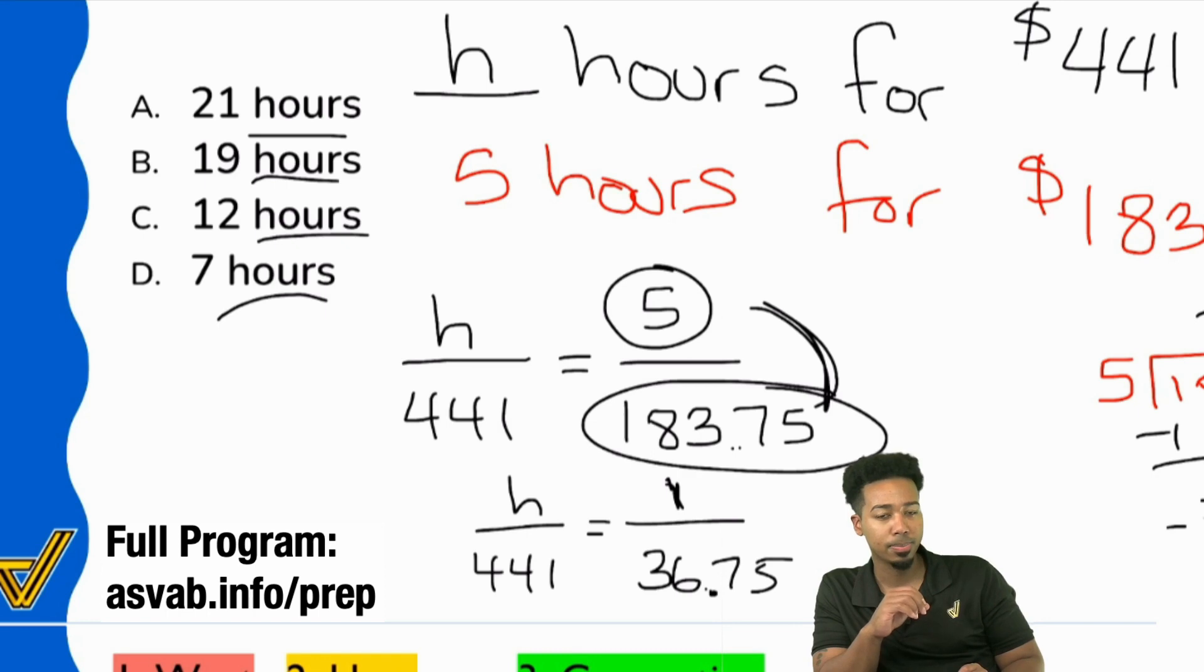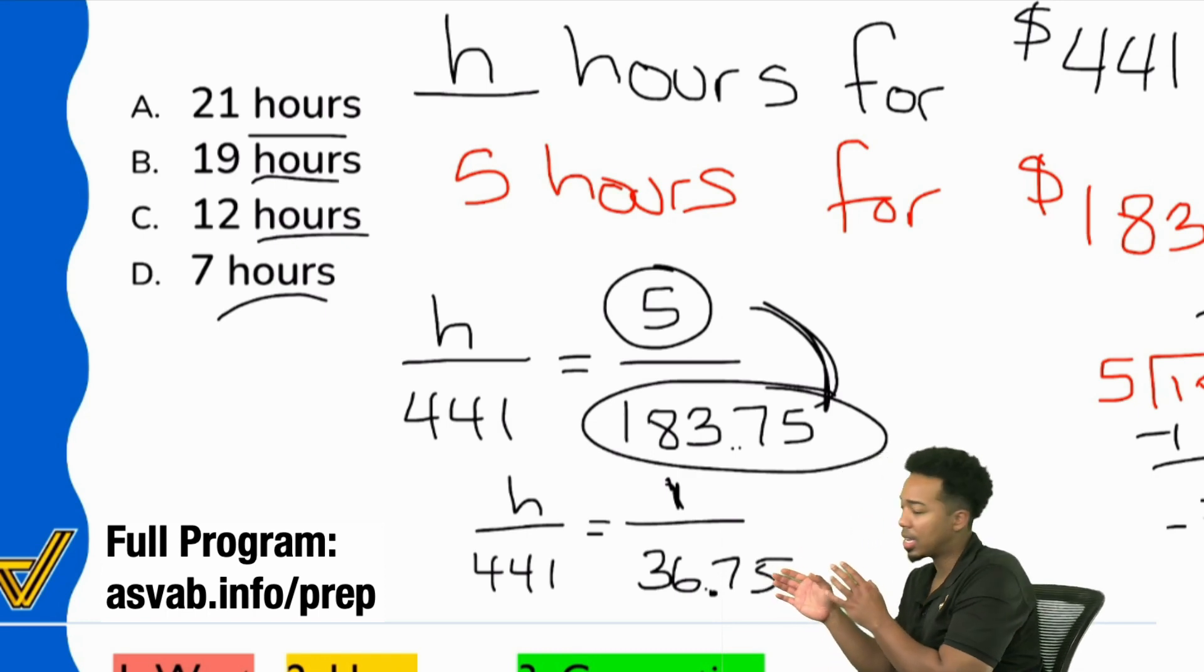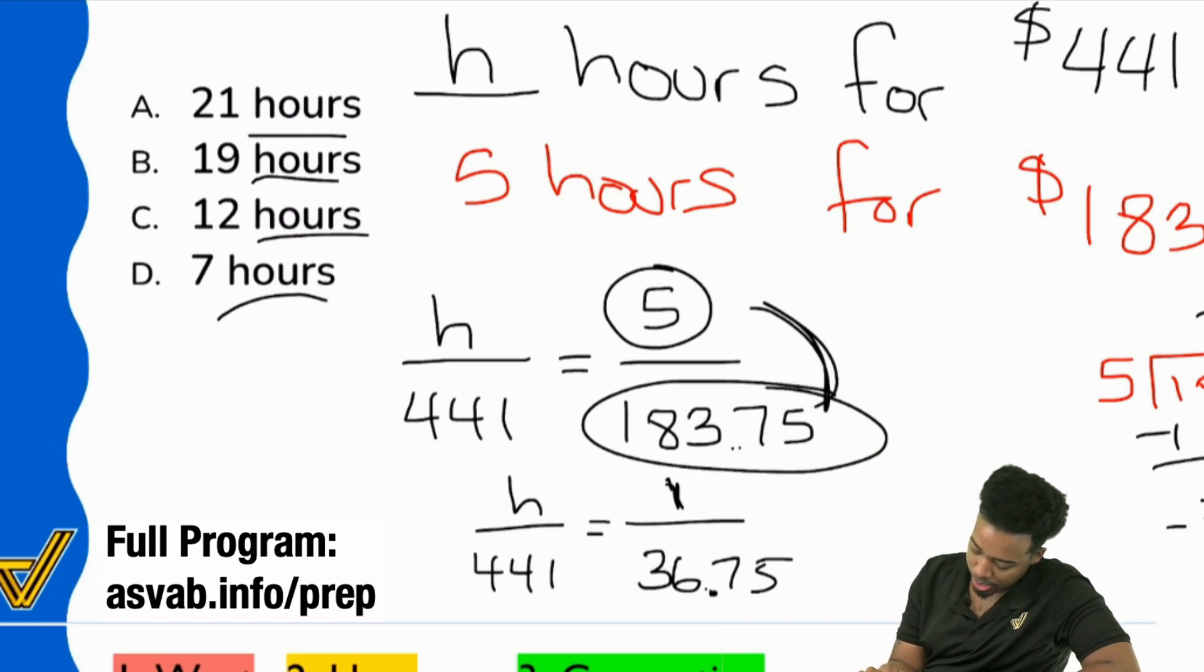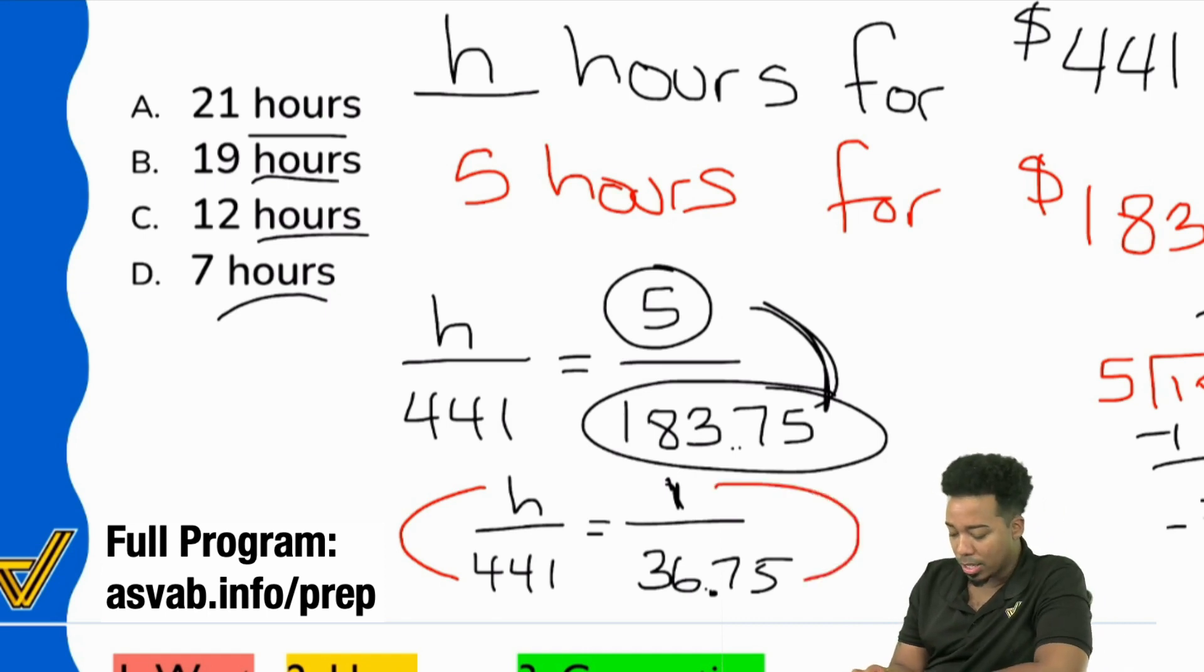I have these numbers here and I can tell you right now that if I wanted to go from 441 to H, it would need to be from 36 to there. So it would need to be sort of like the same comparison. Or you can think of it like this as well. You can think of it as 36.75 to 441 is the same as one to H.